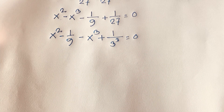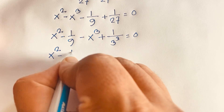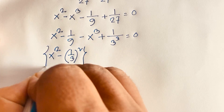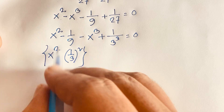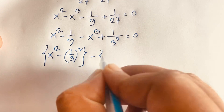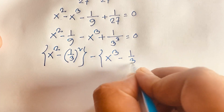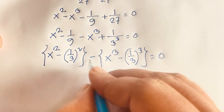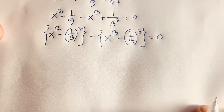This expression becomes (x squared minus (1/3) squared) minus (x cubed minus (1/3) cubed) equals 0, since (1/3) squared is 1/9 and (1/3) cubed is 1/27. We now have a difference of squares minus a difference of cubes equal to zero.